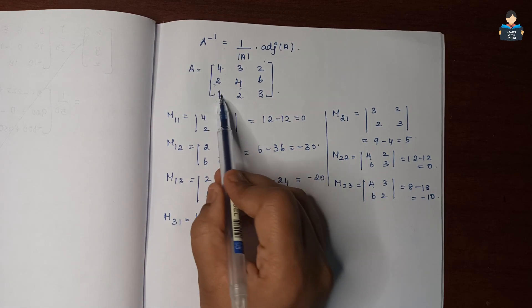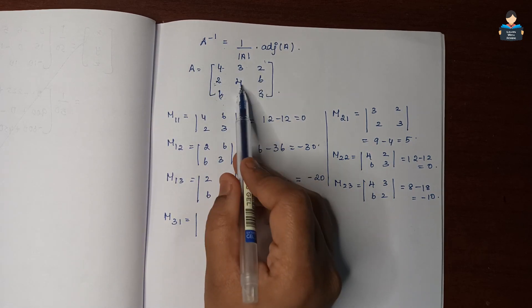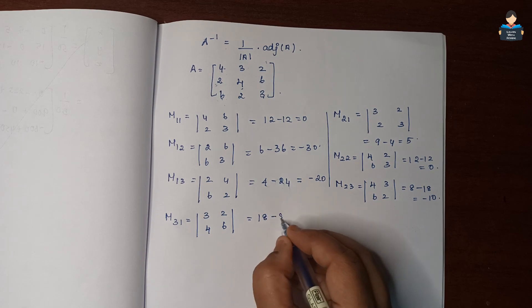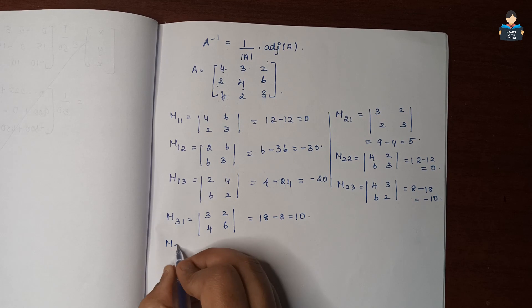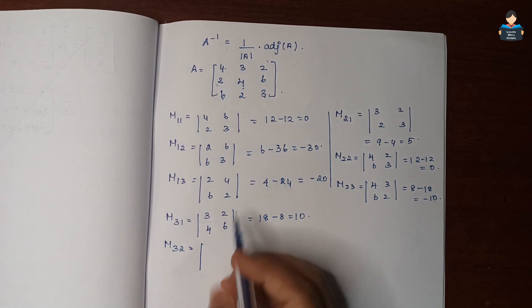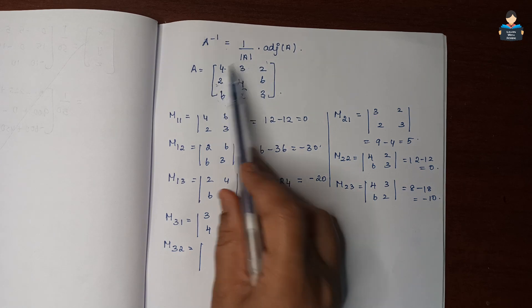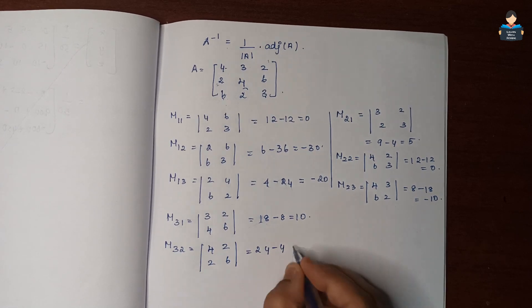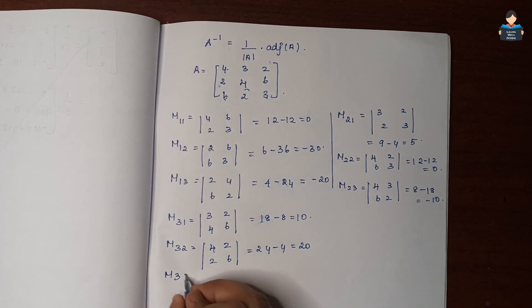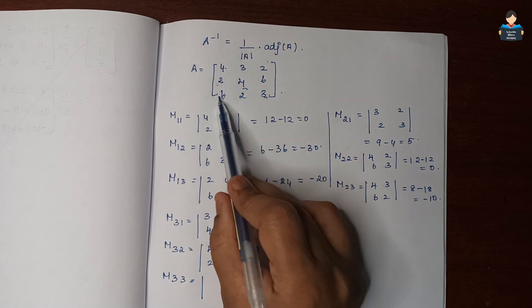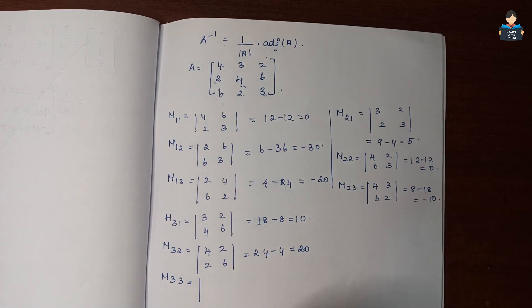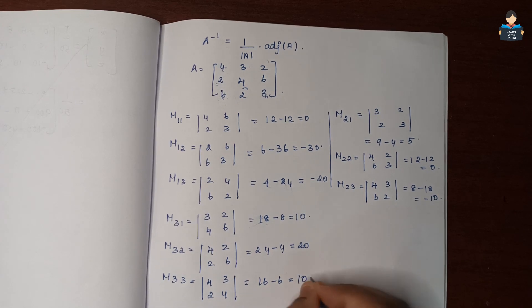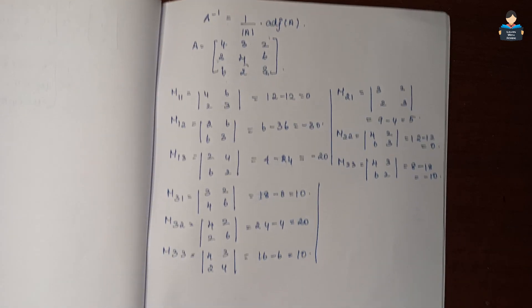Third row minors: M31 = |3, 2 / 4, 6| = 18 − 8 = 10. M32 = |4, 2 / 2, 6| = 24 − 4 = 20. M33 = |4, 3 / 2, 4| = 16 − 6 = 10.